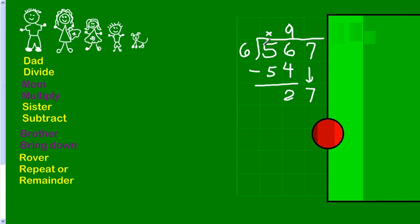27 divided by 6. Well, let's see. That's pretty easy. We know that 5 would be too much because 5 times 6 is 30. So, we're going to say 4. 4 times 6 is 24. And when we subtract, sister says subtract there, right?